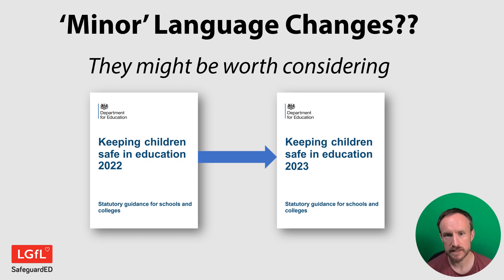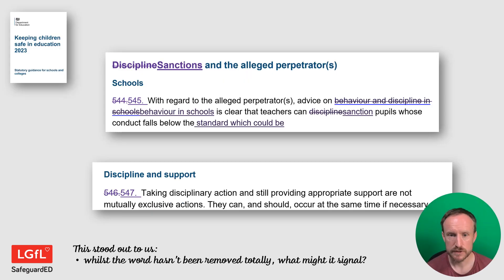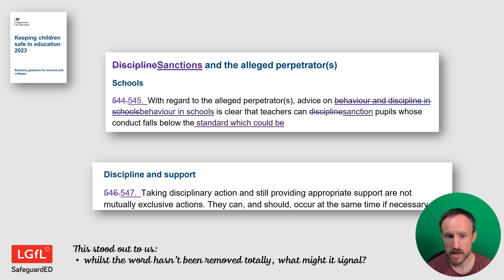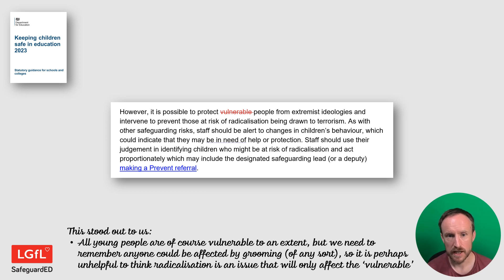We're going to look at some minor language changes where the odd word here or there has been changed. You might not spot it yourself when going through the document, but these could start an all-staff discussion to help you understand what's really driving safeguarding and what's behind your thinking. The word 'discipline' has not disappeared from KCSIE, but it has been removed in various places and replaced with 'sanctions', for example. Why might that be? Does it have something to do with what we think about in society when we hear the word discipline and what schools are trying to do?